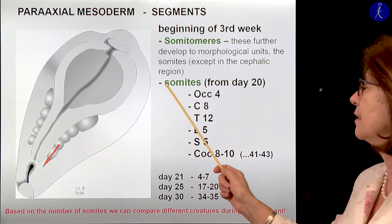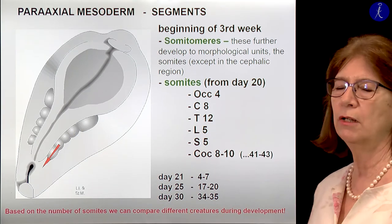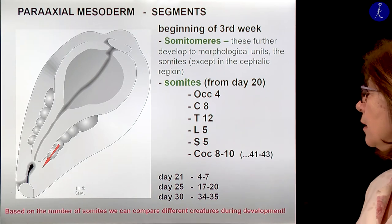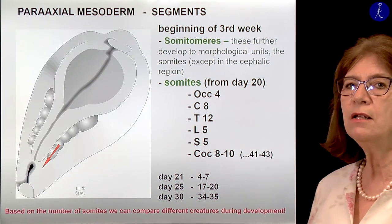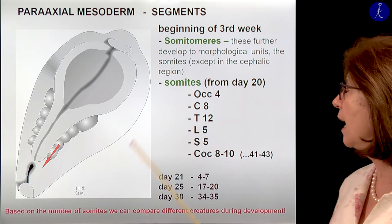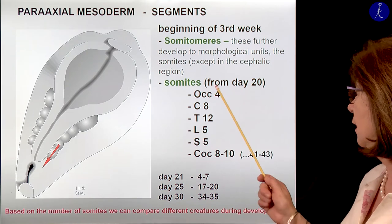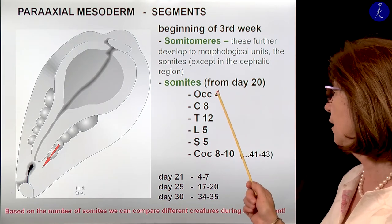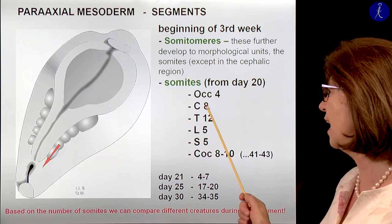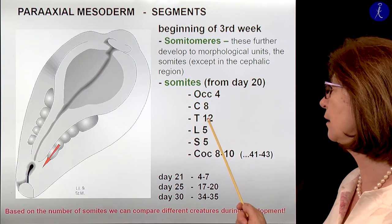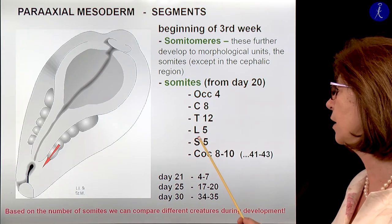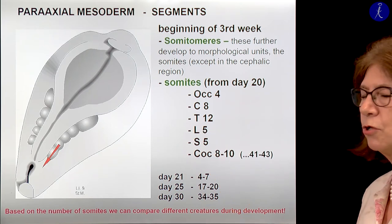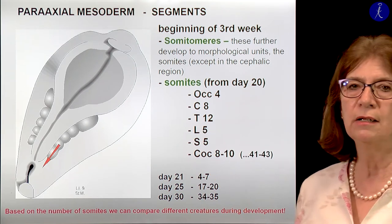These somites start to form from day 20, and every day three new somites will form. At the end we will have four occipital somites, eight cervical, twelve thoracic, five lumbar, five sacral, and eight to ten coccygeal somites.